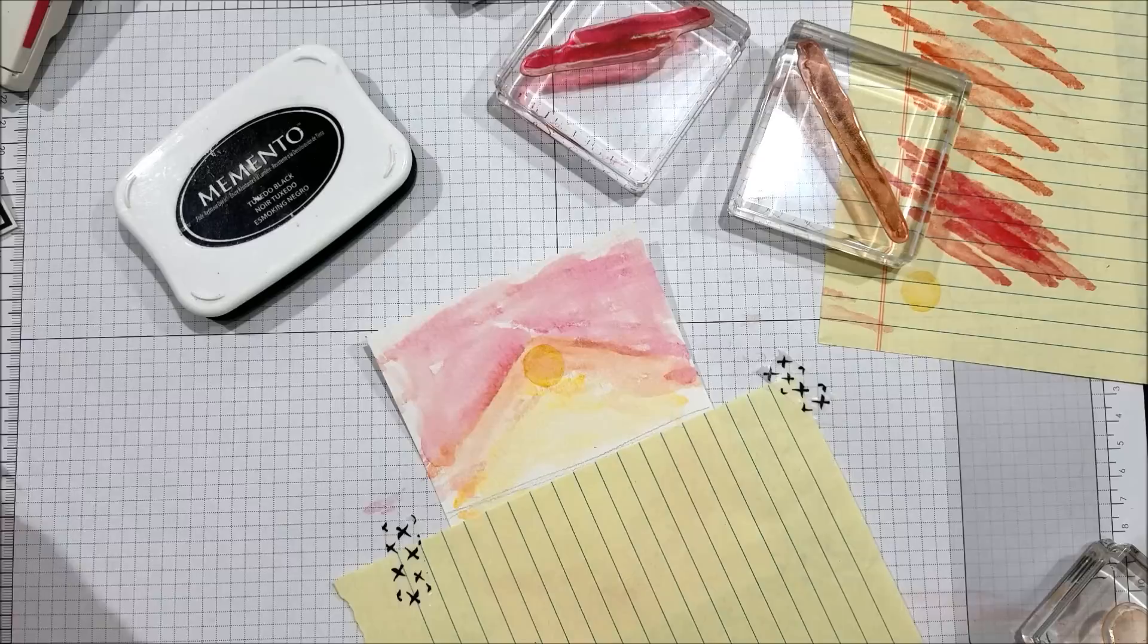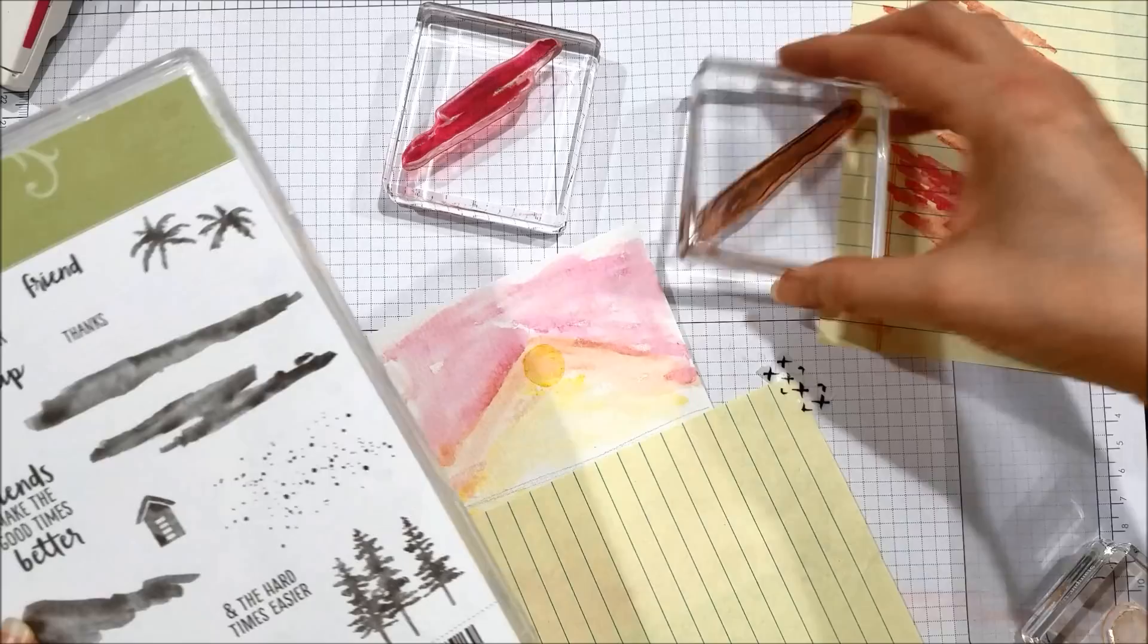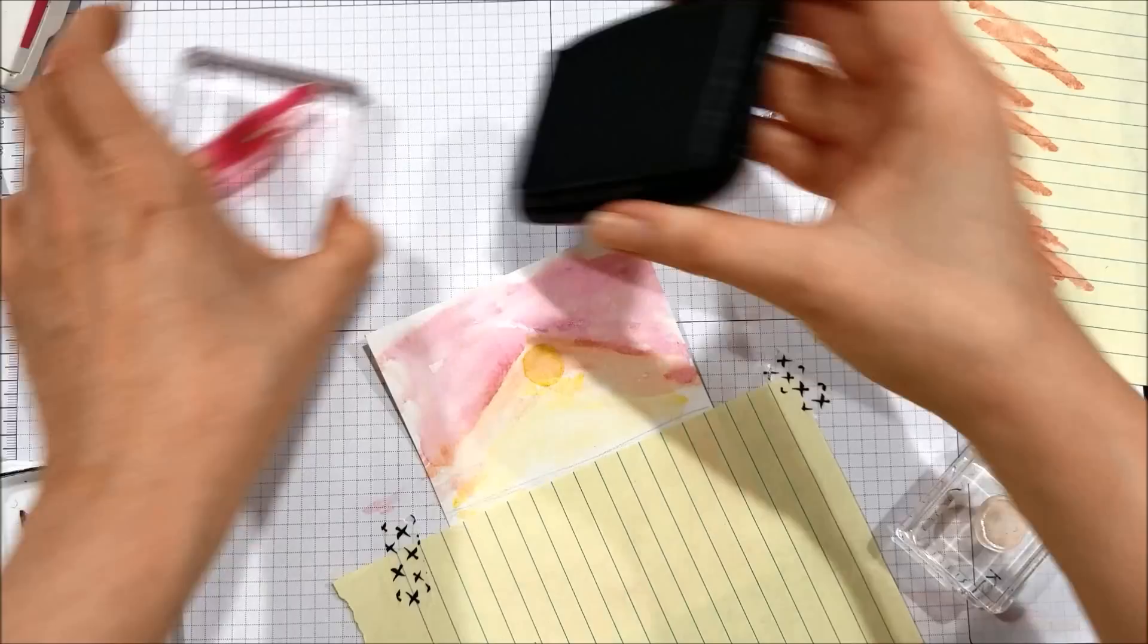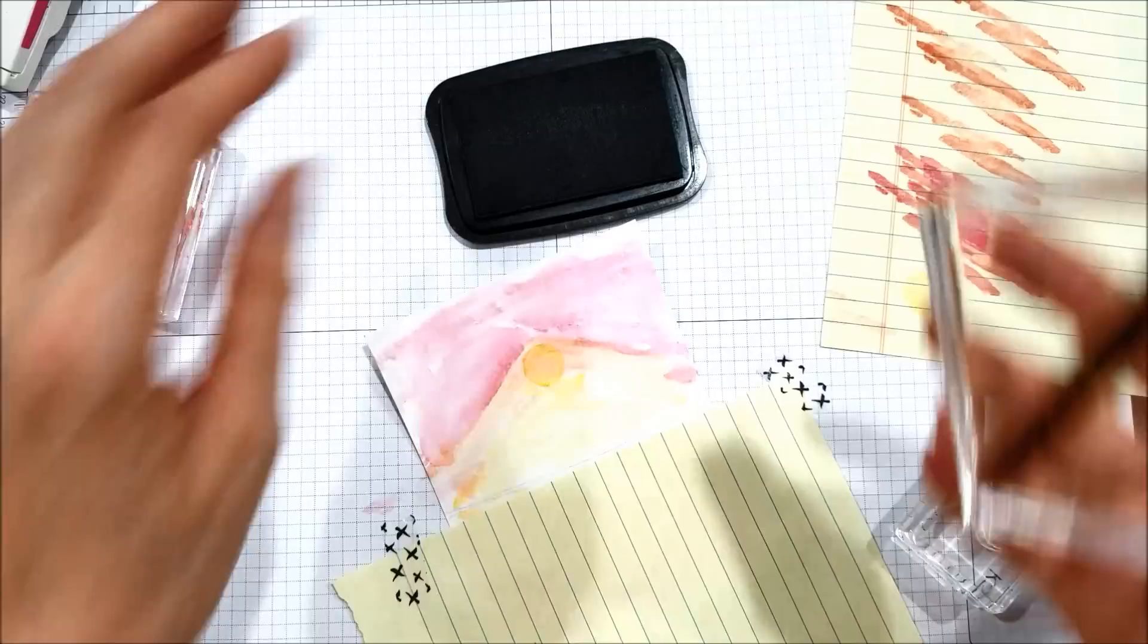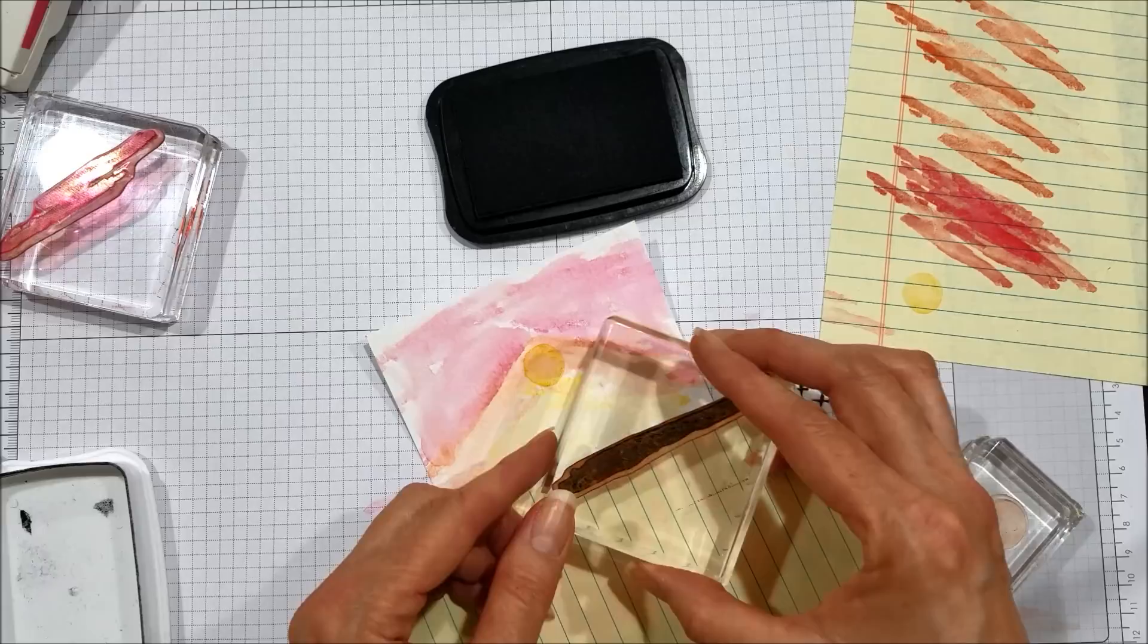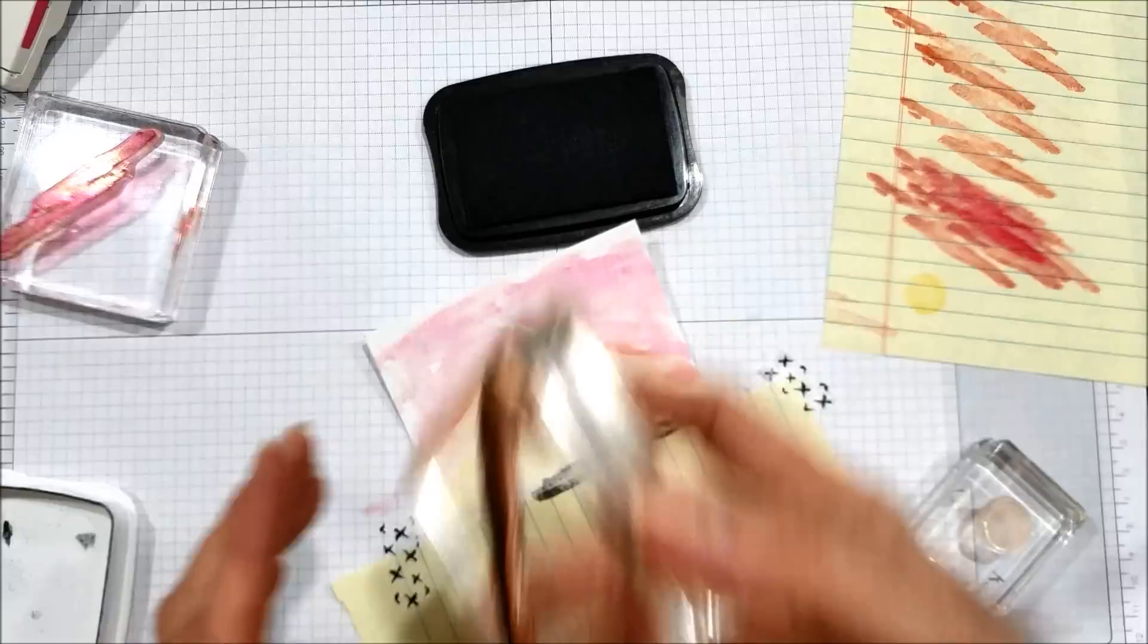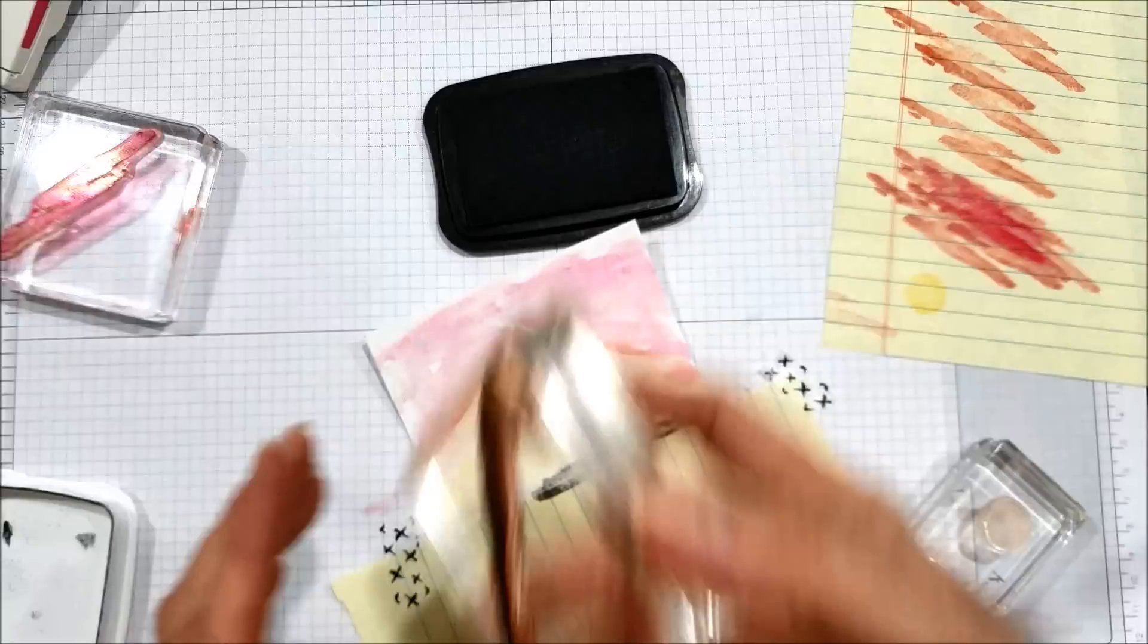The first thing I'm going to do is take this long stamp. We're basically just using these three images for this. I'll take the long stamp and ink it up with the tuxedo black. What I'm wanting to do here is get in the base of the buildings. I don't want it that wide though, so I'm going to be stamping partially on this paper and partially on the mask or scrap paper I have.